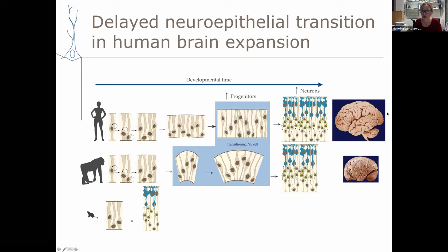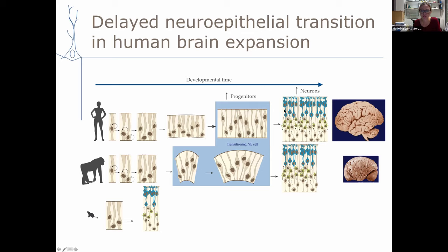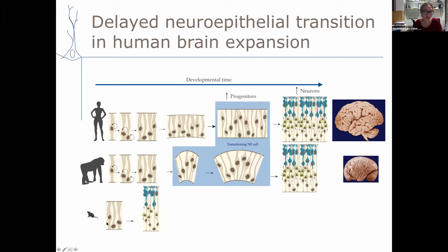Because of that increased number of founder stem cells, once they switch to making neurons, you simply have more to work with — so you make more neurons across all types. Human brains are around three times larger than apes and all neuron types are about three times increased. It's a matter of timing: by delaying this cell shape transition, humans see a slight increase in progenitors that leads to a dramatic effect on final neuron number. The whole process takes over a week in humans and apes, whereas in rodents it happens in a matter of hours.